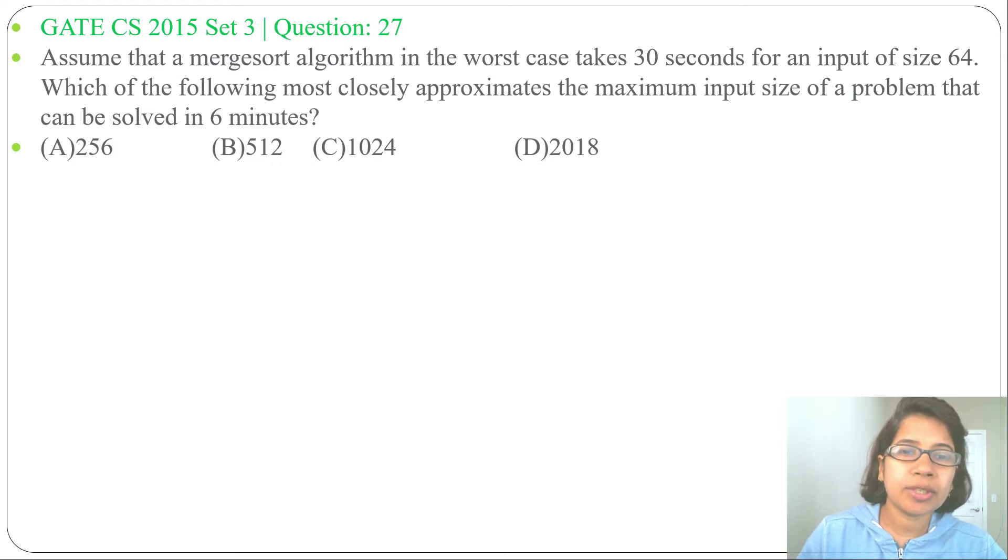Assume that a Mergesort algorithm in the worst case takes 30 seconds for an input of size 64. Which one of the following most closely approximates the maximum input size of a problem that can be solved in 6 minutes? Four options are given. So it is saying if we are taking input as 64, it can be solved in 30 seconds. Then what will be the input for solving in 6 minutes?